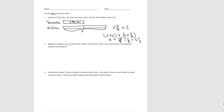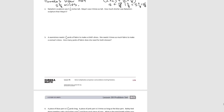So our answer, writing it in a complete sentence: Tamika's sister ran five and two-eighths miles. Don't forget to write in the units — miles. So if that was the answer you came up with, that's also correct. Now read number two and try that one on your own.